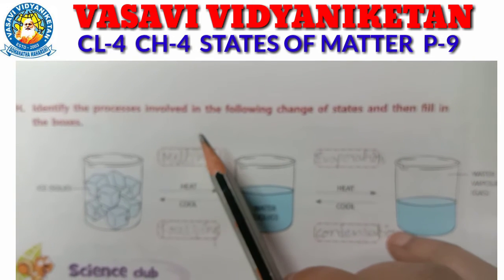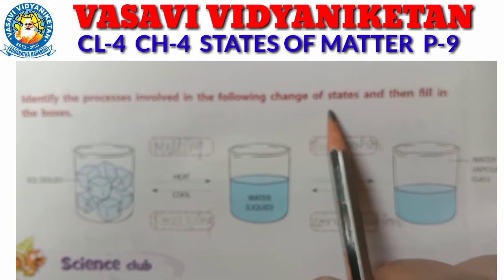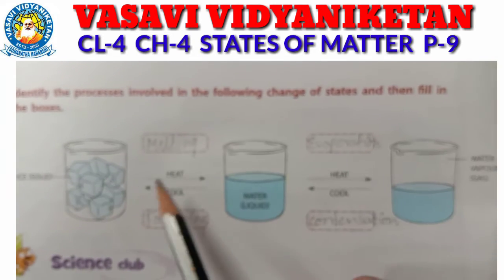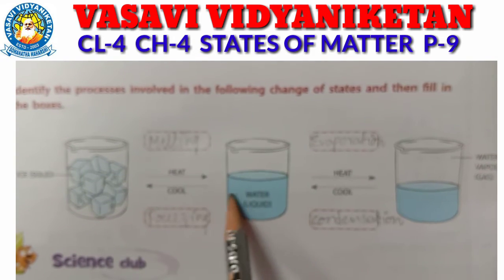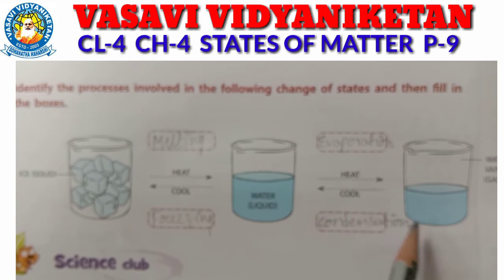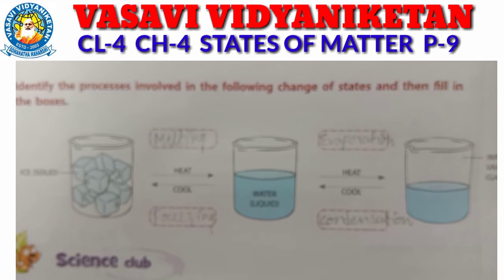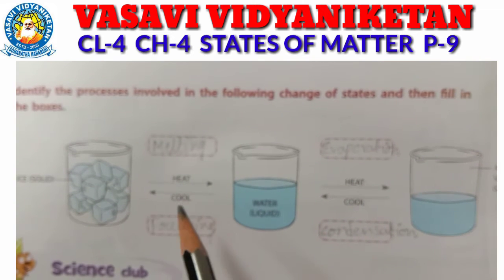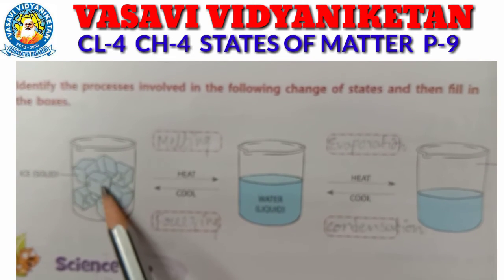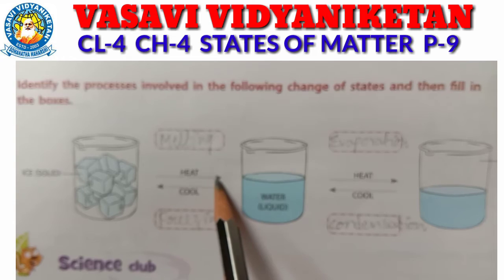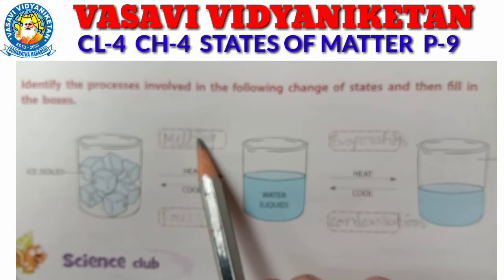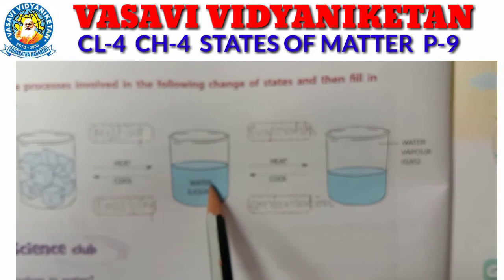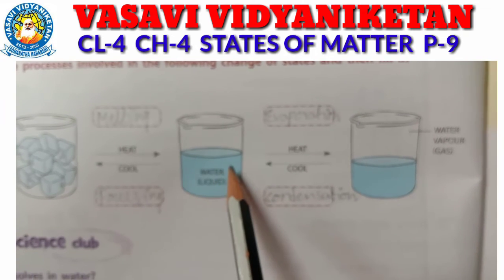Identify the process involved in the following change of states and fill in the boxes. First, ice — when we heat ice, what happens? Melting happens. When heated, ice melts and changes to water.